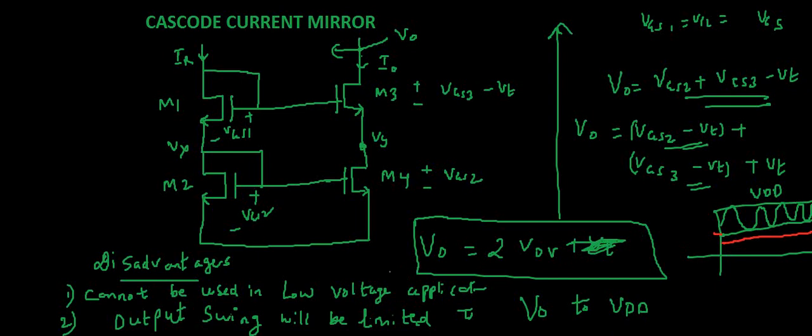So we will see that in the next video. For now I hope it is clear how to calculate the output swing of cascode current mirror. So output swing is limited to 2 VOV plus VT to VDD.